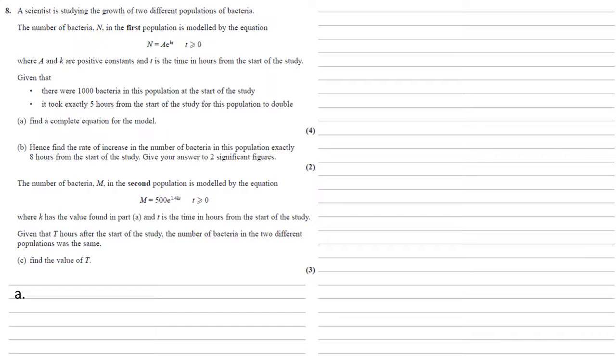A scientist is studying the growth of two different populations of bacteria. The number of bacteria n in the first population is modeled by the equation n equals a e to the kt for t greater than or equal to zero, where a and k are positive constants and t is the time in hours from the start of the study.